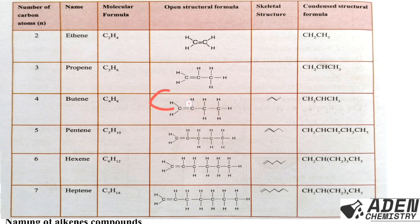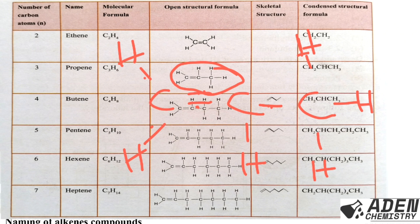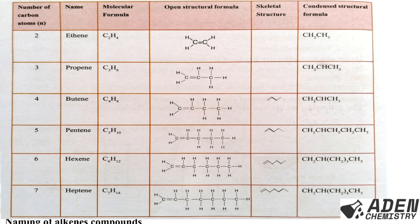For propene, we have three carbon atoms. The first carbon has the double bond, leaving two more bonds for hydrogen. The second carbon in the double bond has one remaining bond for hydrogen. The third carbon requires three more bonds, all filled with hydrogen. If you count: 3 carbon atoms — C3 — and six hydrogen atoms, giving C3H6.